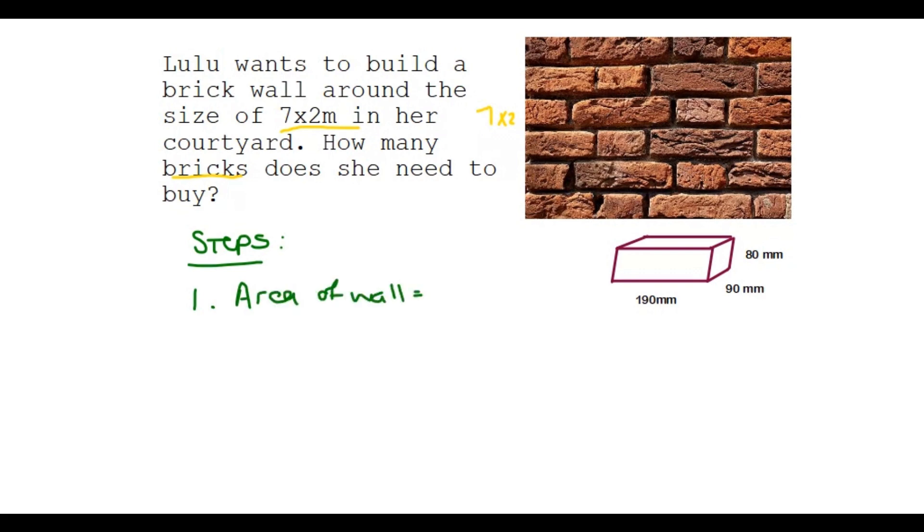And that's seven by two. It's length times width. Because it's a rectangle. And that's going to be seven times two. And it gives you 14 square meters. You don't even need a calculator. Let me just write that properly.